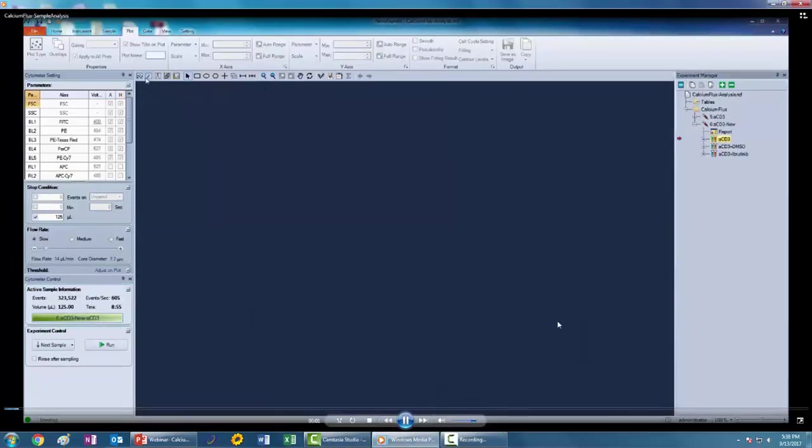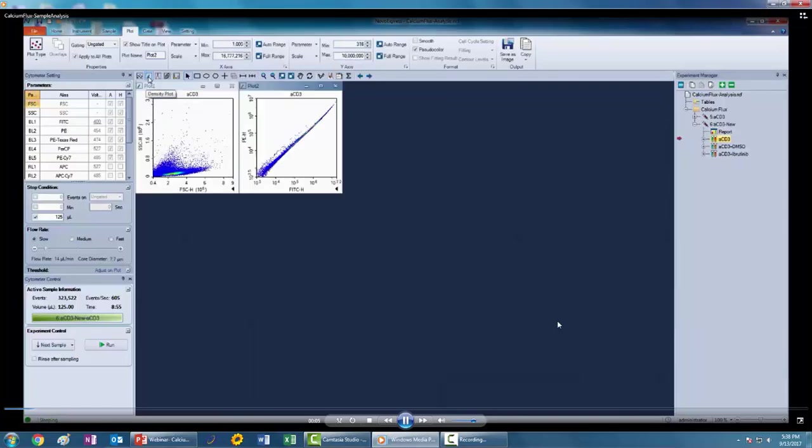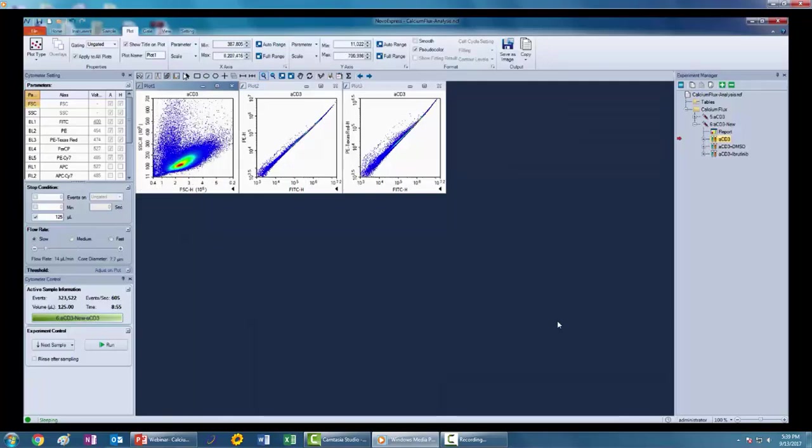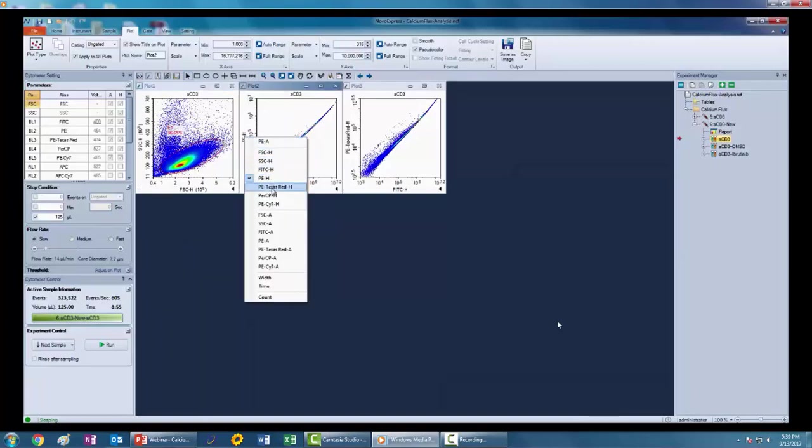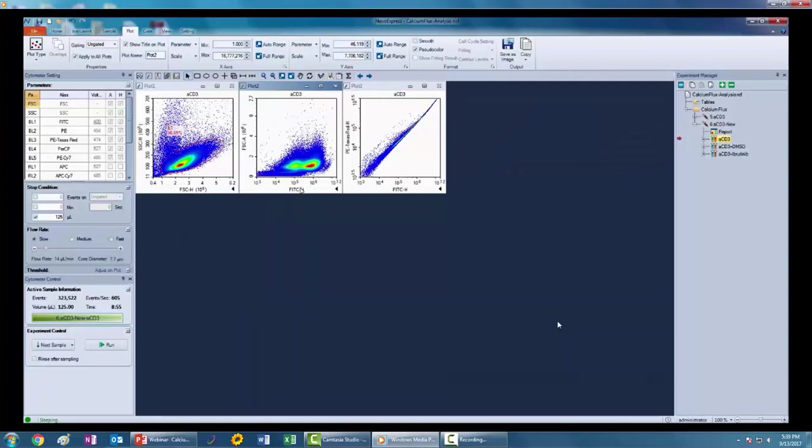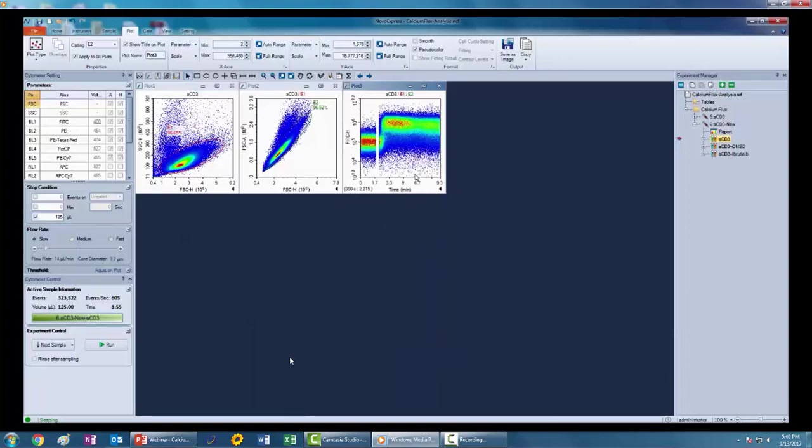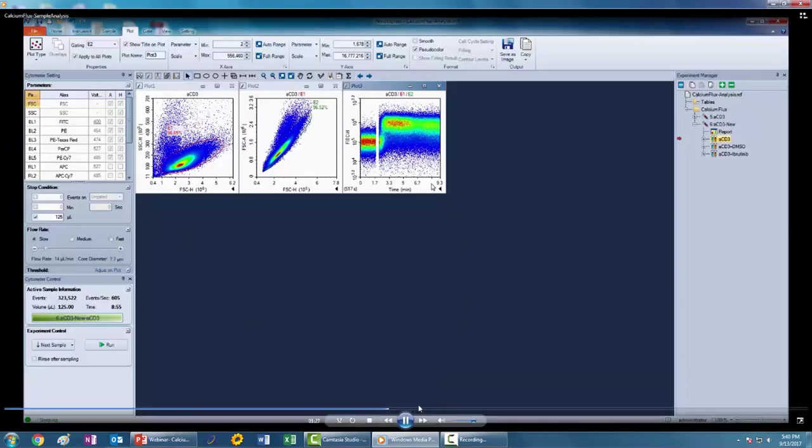Now I'm going to demonstrate how to do further data analysis in our Nova Express software. First I'm just doing the normal gating on cell populations in forward scatter and side scatter. In the second plot I am going to be excluding doublets with forward scatter height and forward scatter area. Finally we're going to look at our plot of interest, which is monitoring the fluorescence signal in the FITC channel over time. This allows one to look at the change in the fluorescence signal in response to calcium influx.